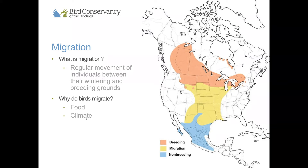Not all birds migrate north to south. Some birds are altitudinal migrants — they spend their springs and summers at high elevations and then winter down at lower elevations. Birds' migration direction is also affected by large mountain ranges. We did a two-part webinar series on migration in the fall, and those are available on our YouTube channel.